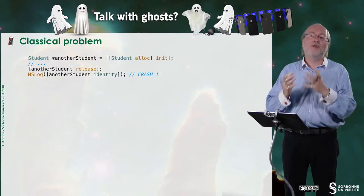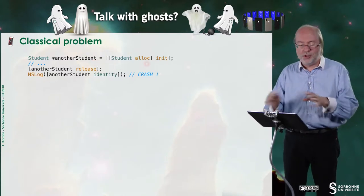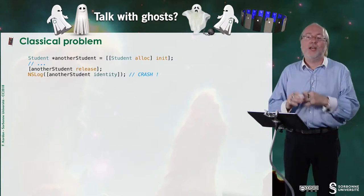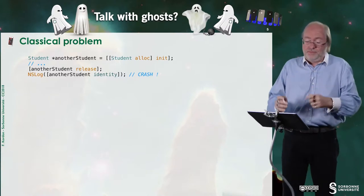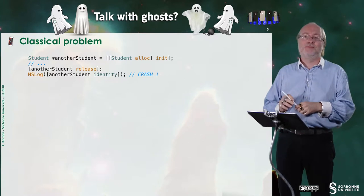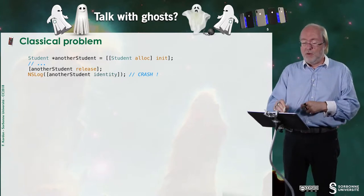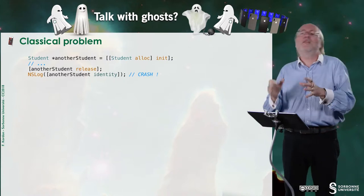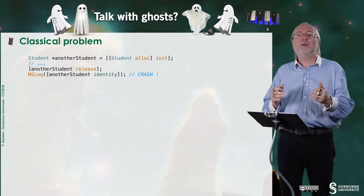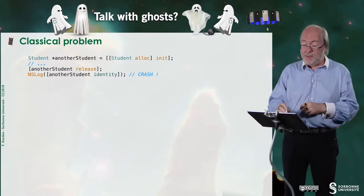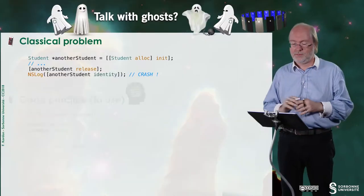Here, I'm creating in a variable, I'm creating a new object, another student. Student alloc init, no problem. And I'm doing another student release after a while. I don't care about the code here, but after a while, I'll do another student release. And later, I want to do NSLog, another student identity. There is a crash. When I did the release, I say I'm not anymore an owner of this object. Well, let's imagine that there is no co-owner. If there is a co-owner, then it will crash sometimes. It's not better because it's more difficult to find and track the bug. But if I'm the only owner, then this instruction will cause a crash. Why? Because the reference here points to a location in the memory that is not allocated anymore.